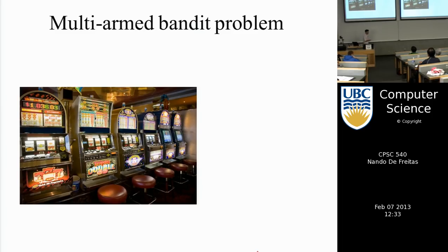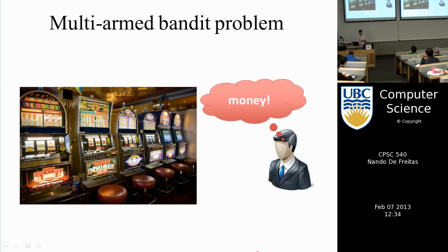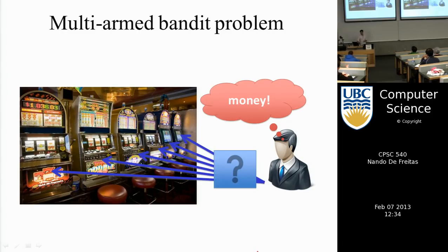The problem we will deal with is known as the multi-armed bandit problem. Bandits are machines you find in a casino, and when you enter, your job is to decide which of these bandits to try — which one is likely to give you the most money.